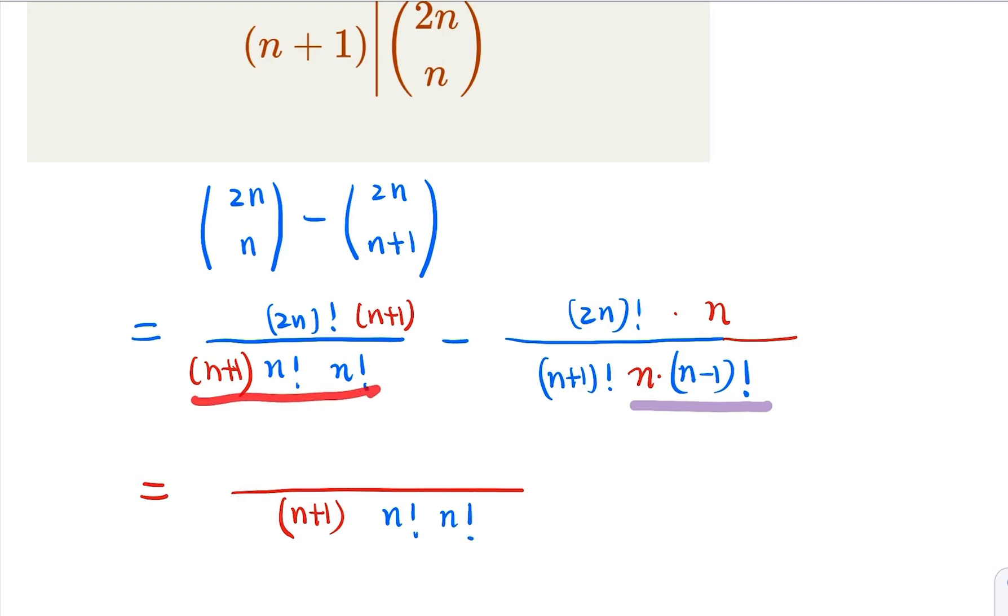So this is the same here. This here is going to be, because this whole thing is n factorial, and this is n plus 1 times n factorial.